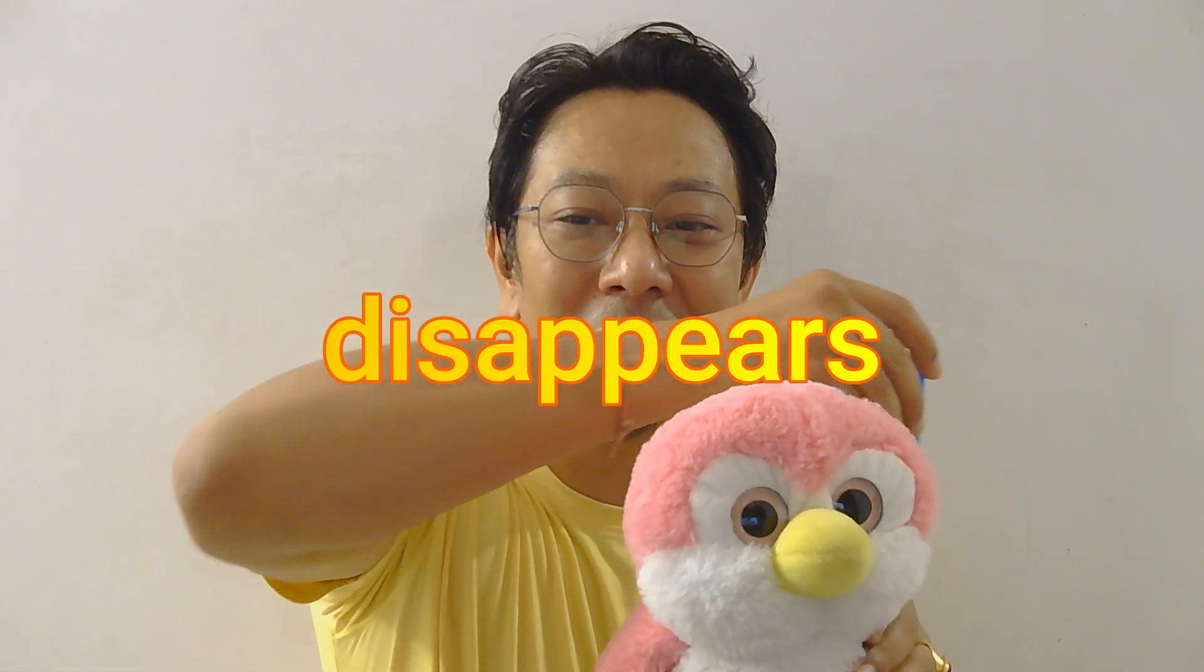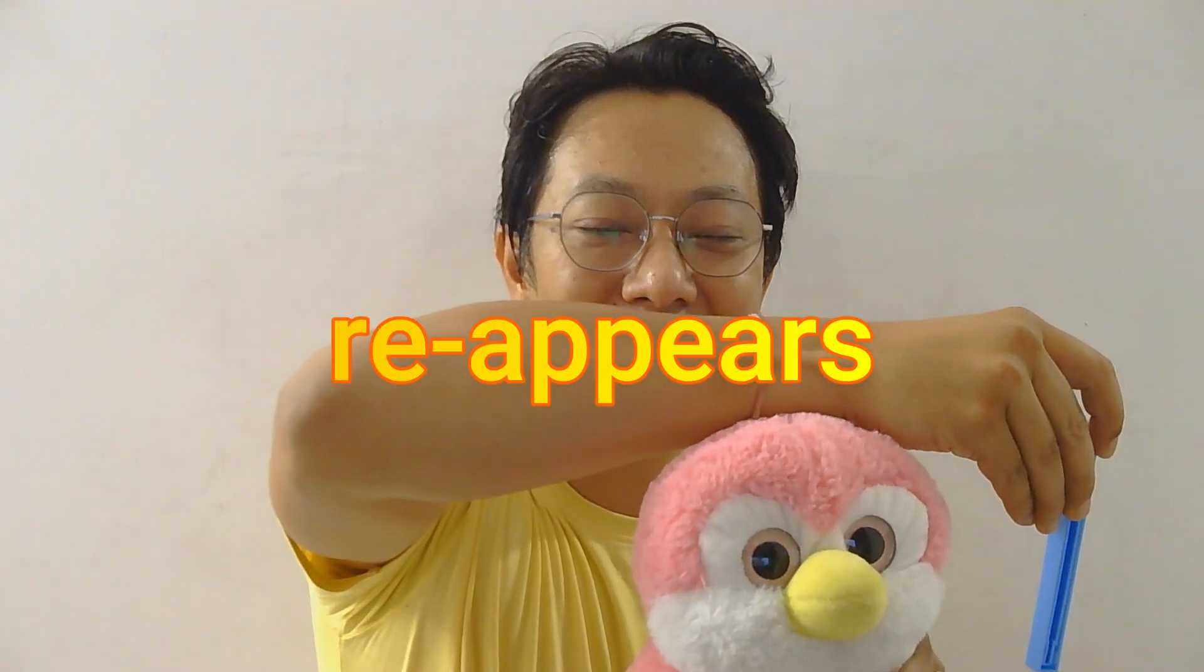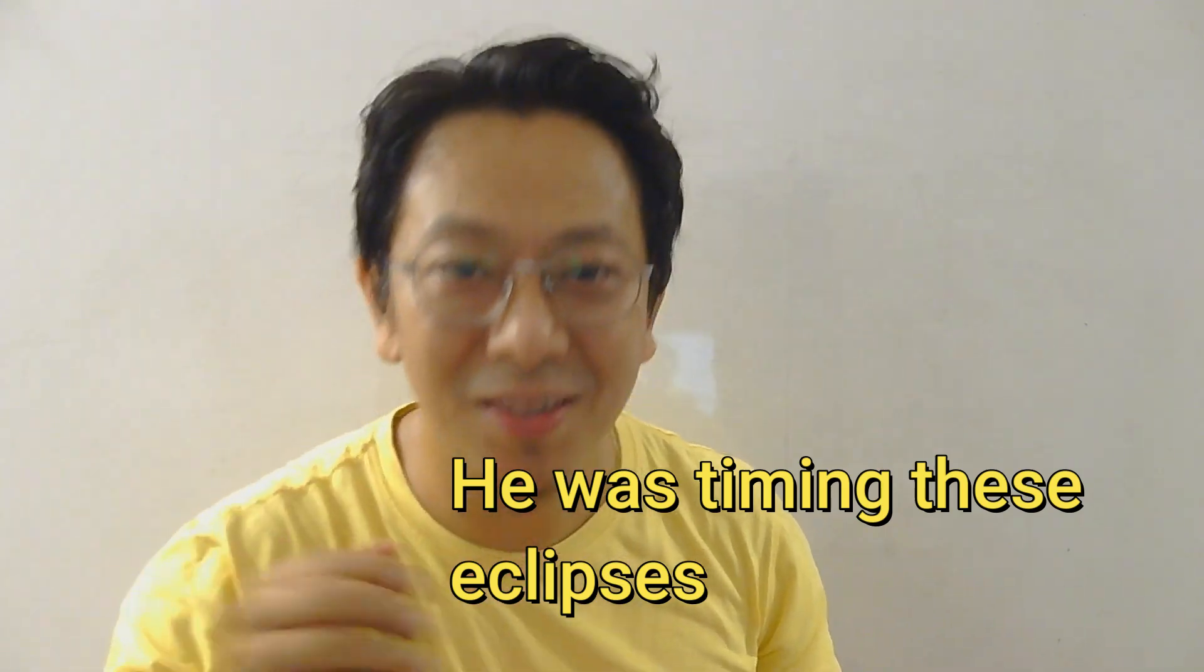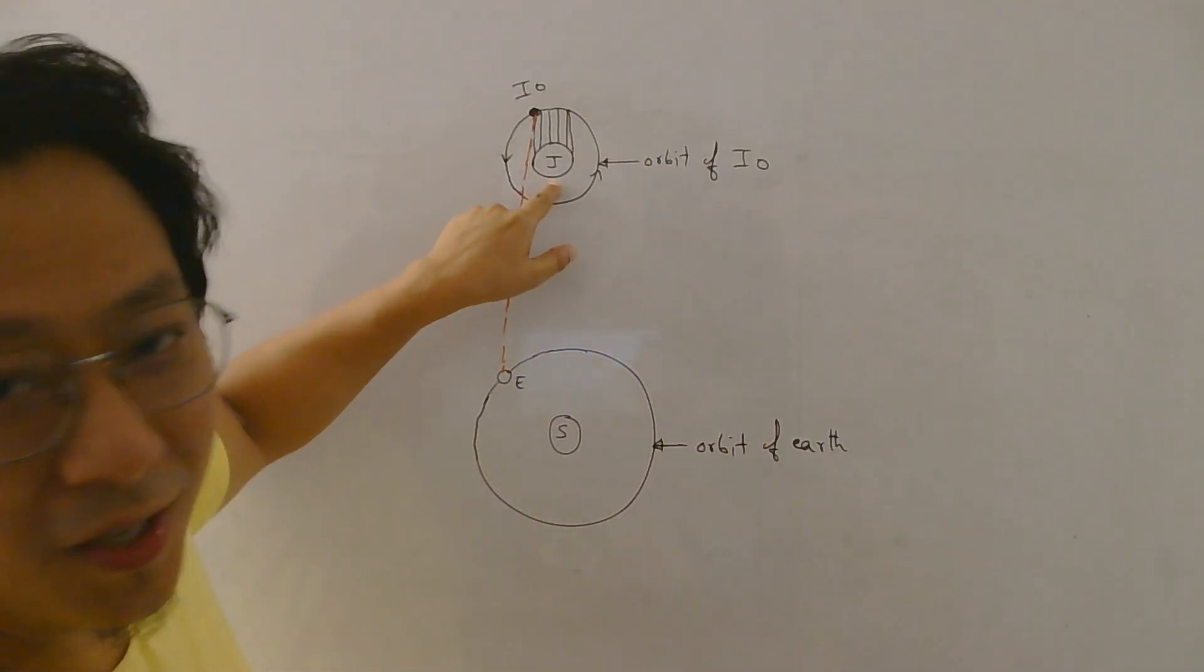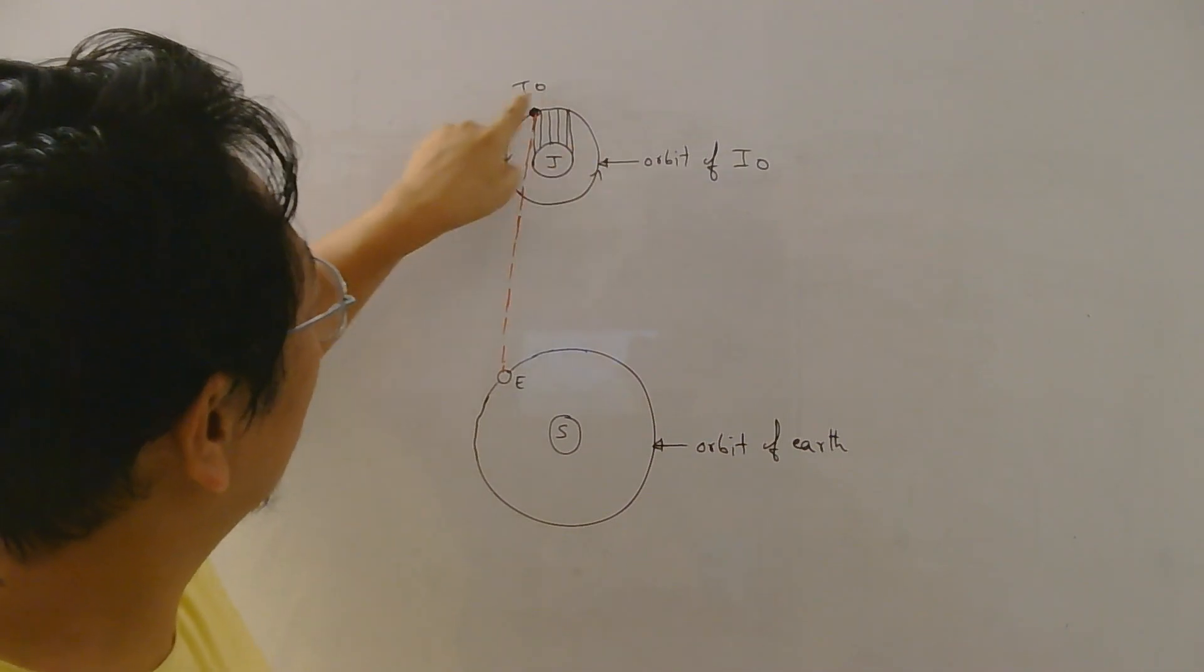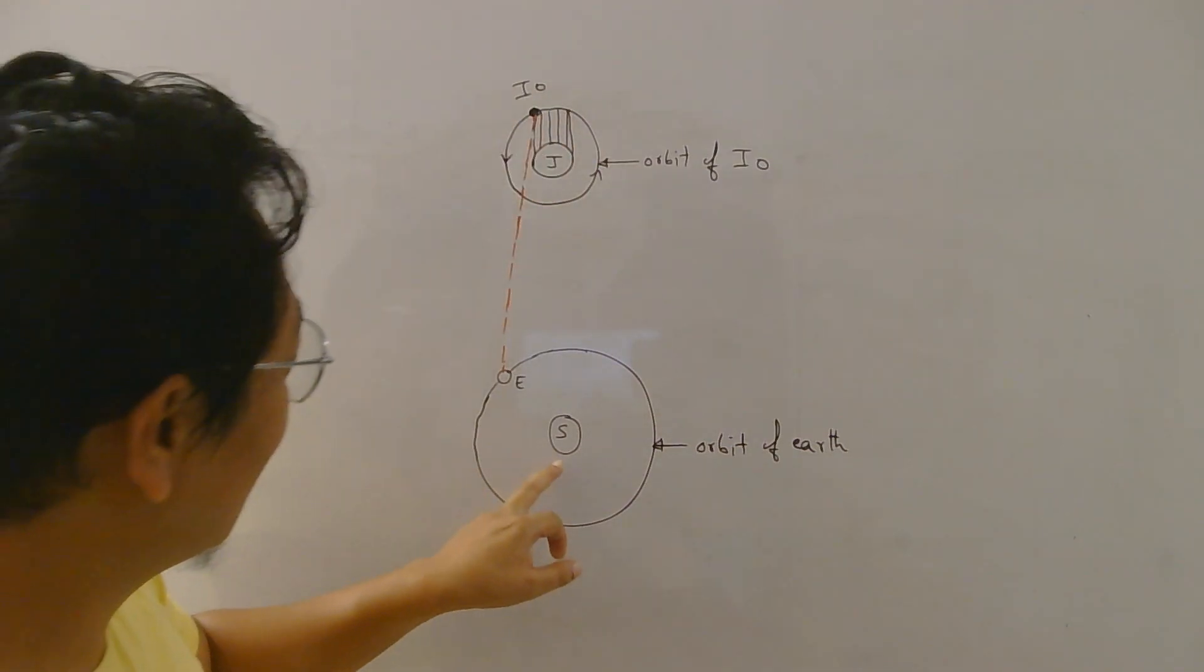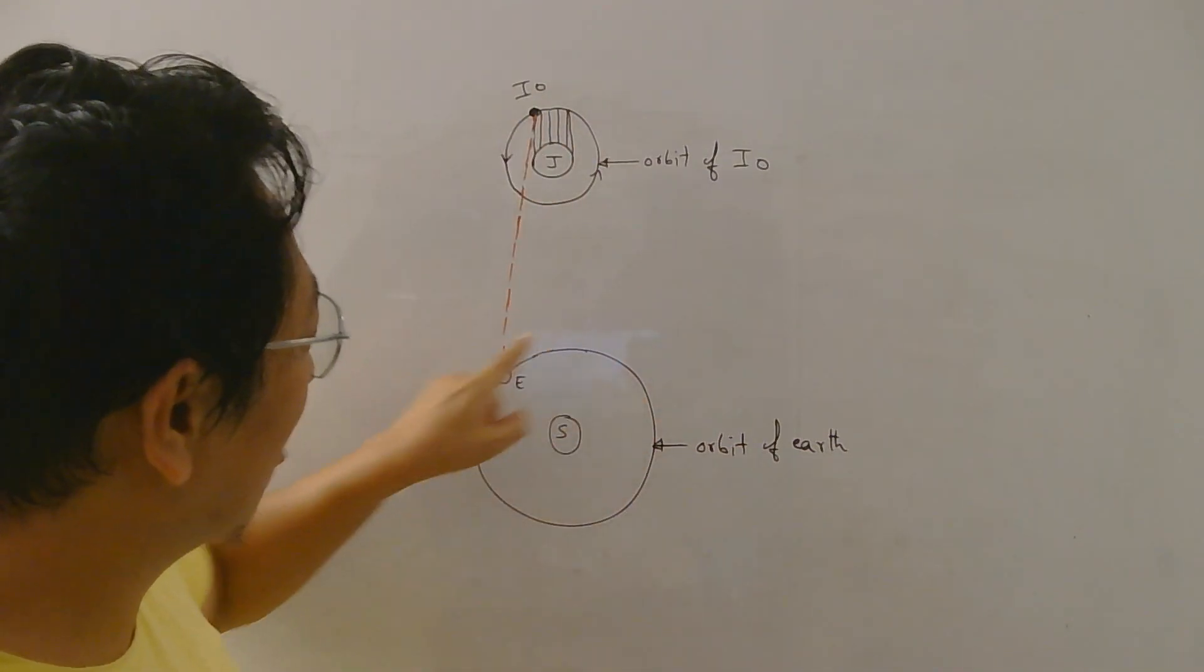Basically we say the moon has gone into the shadow of Jupiter and therefore it is not visible. Now Romer was trying to time this eclipse. He was trying to see the times when the moon disappears and then when it again reappears, then again disappears, then again reappears. So he was timing these events. Now focus on this diagram. This is Jupiter, this is the moon of Jupiter revolving around it, this is sun, and this is earth revolving around sun.